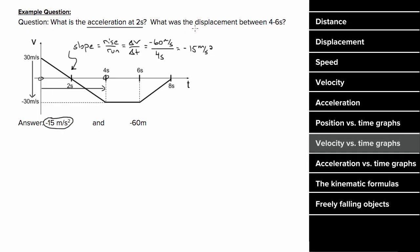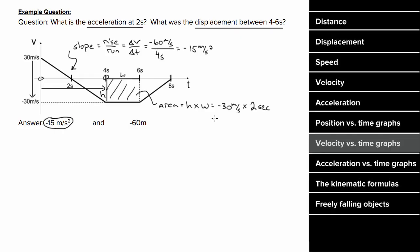To determine the displacement of the object between four and six seconds, we find the area under the graph between four and six seconds. The area under a rectangle equals height times width. The height is negative 30, and the width is two seconds, giving an area of negative 60 meters, which means the displacement between four and six seconds was negative 60 meters.